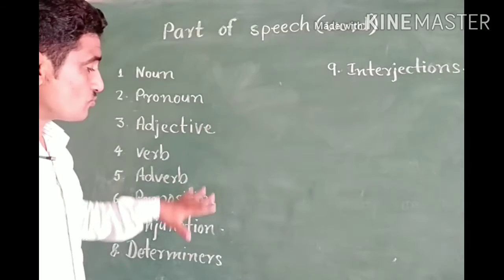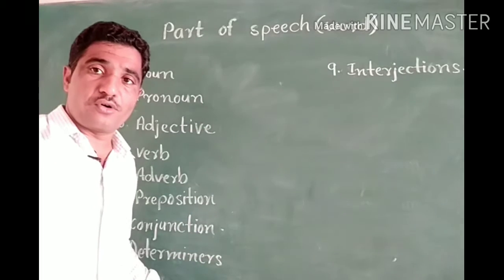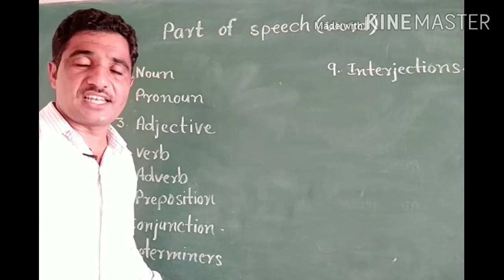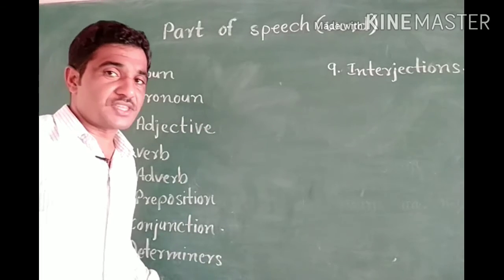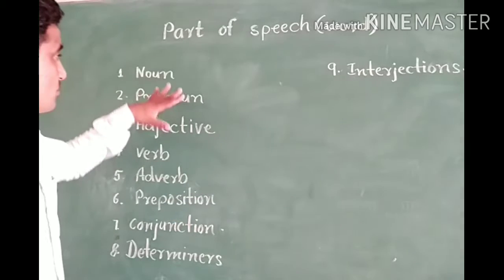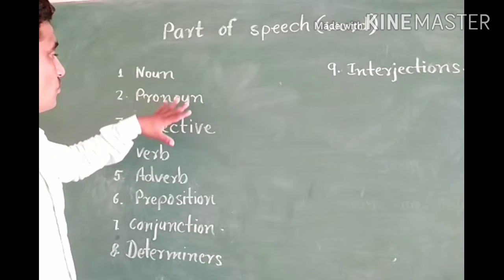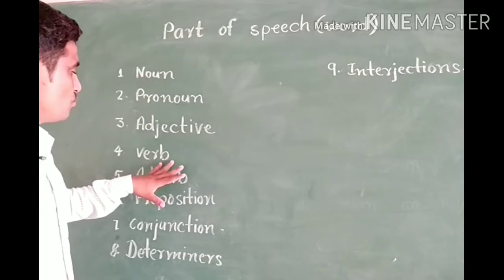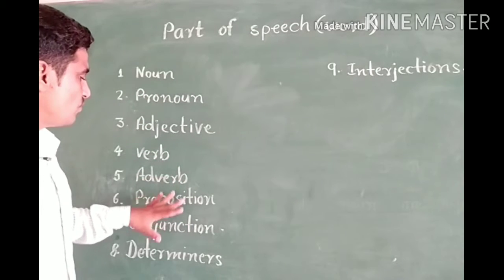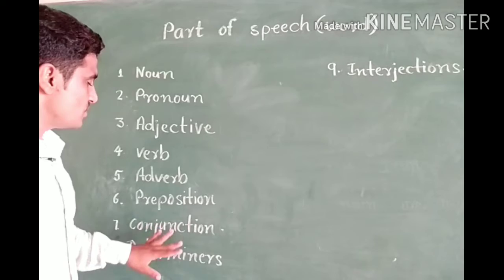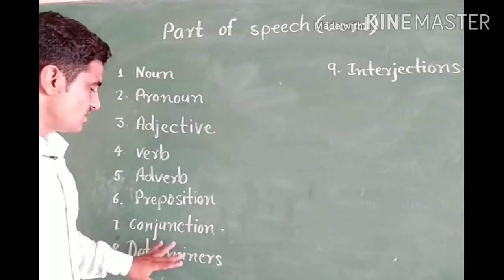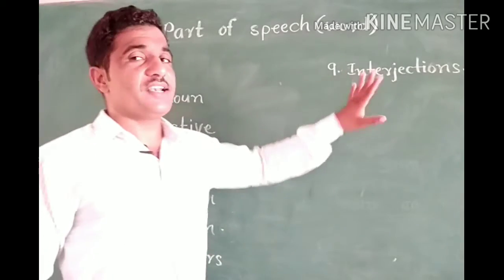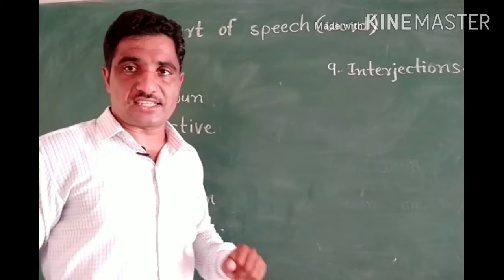There are nine types of parts of speech in the English language. The first one is noun, then pronoun, adjective, verb, adverb, preposition, conjunctions, determinants, and interjections.